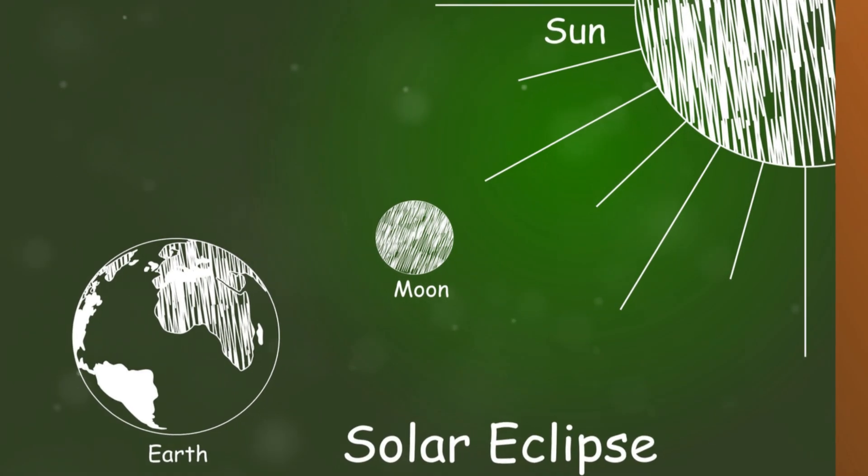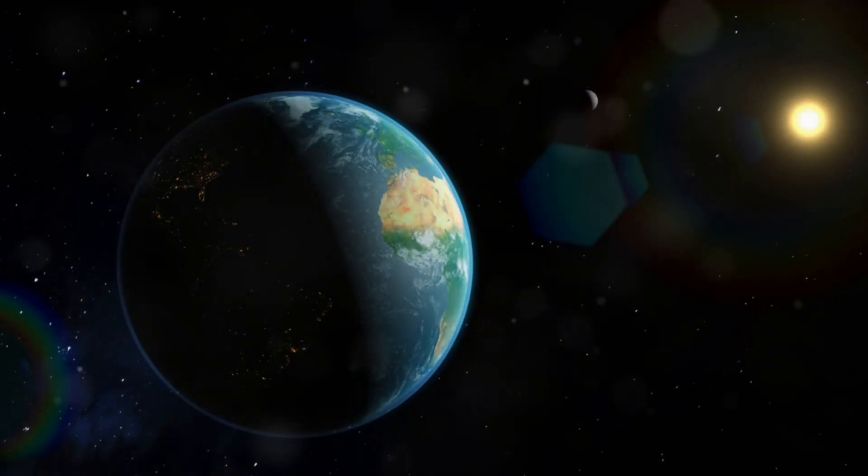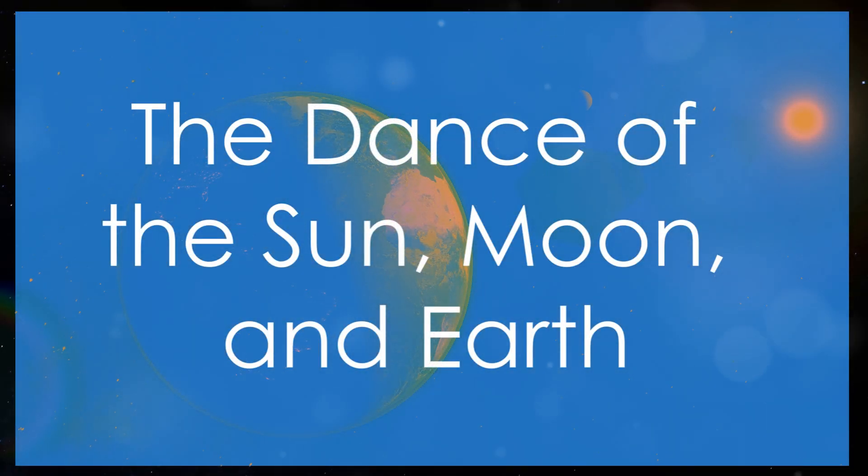They remind us that even though the Sun is huge and the moon is much smaller, they can line up perfectly sometimes. This perfect alignment is a reminder of the harmony in our solar system. Keep reading to learn more about these amazing events.